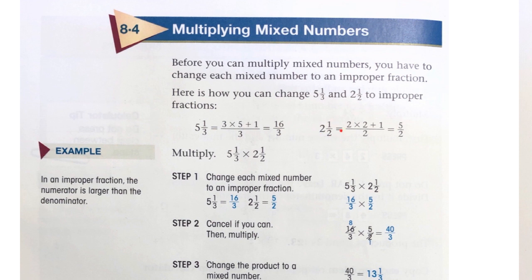For 2 and a half, the denominator times the whole number plus the numerator. 2 times 2 plus 1 equals 5. The denominator stays the same at 2.